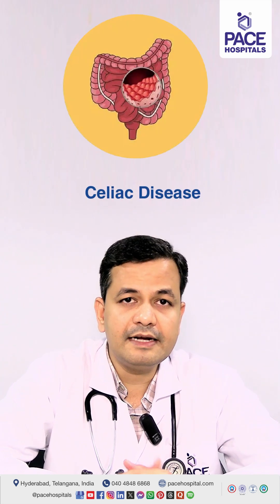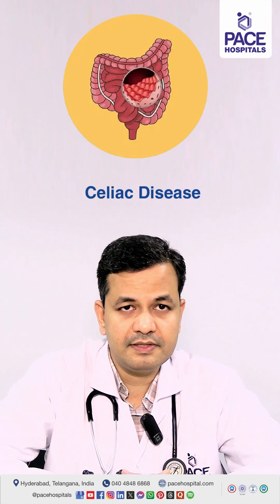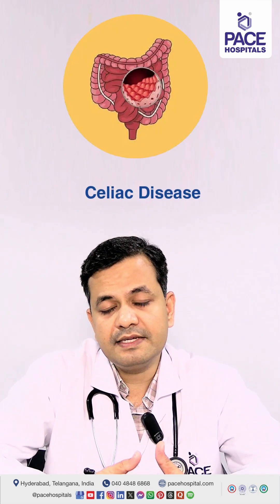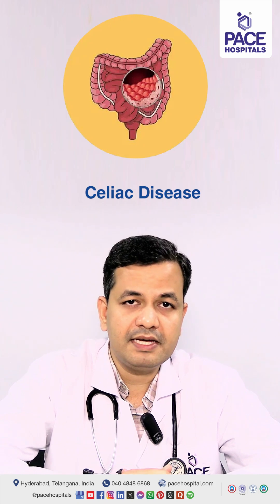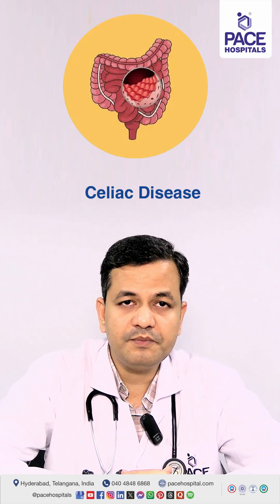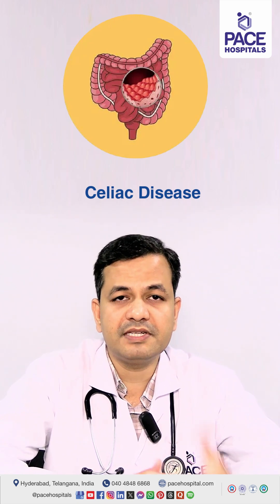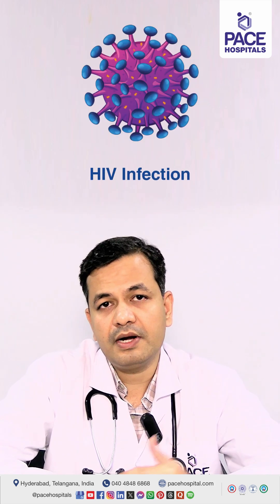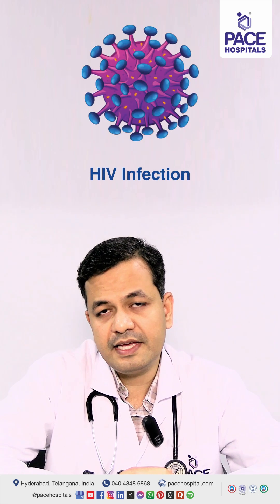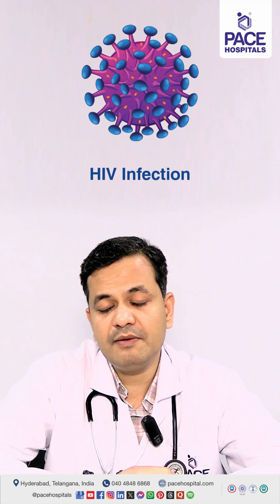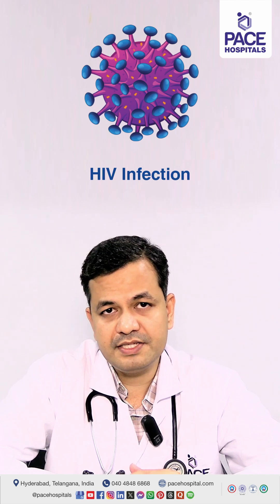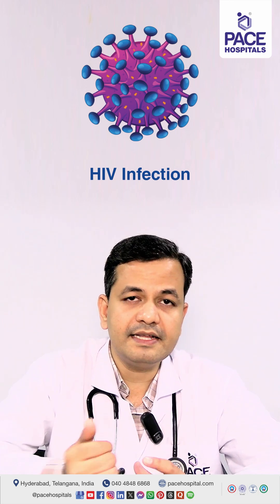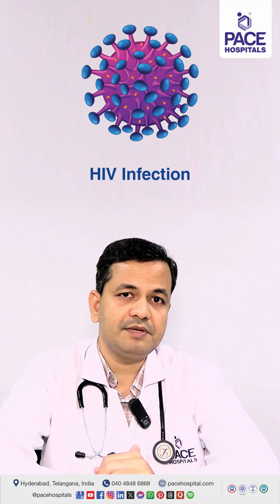Some patients can have celiac disease, a problem related to the intestines, which also carries a risk of developing IgA nephropathy. Additionally, infections such as HIV and other infections can lead to the development of secondary IgA nephropathy.